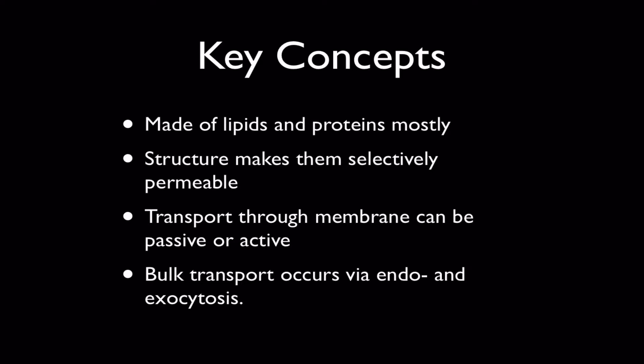Key concepts to remember and that we're going to cover in these video casts: the plasma membrane is made mostly of lipids and proteins. This structure is what allows the cell membrane to be selectively permeable, otherwise known as semi-permeable, and that transport through the membrane can be both active or passive. And there is something called bulk transport, which you probably already know as endocytosis or exocytosis.